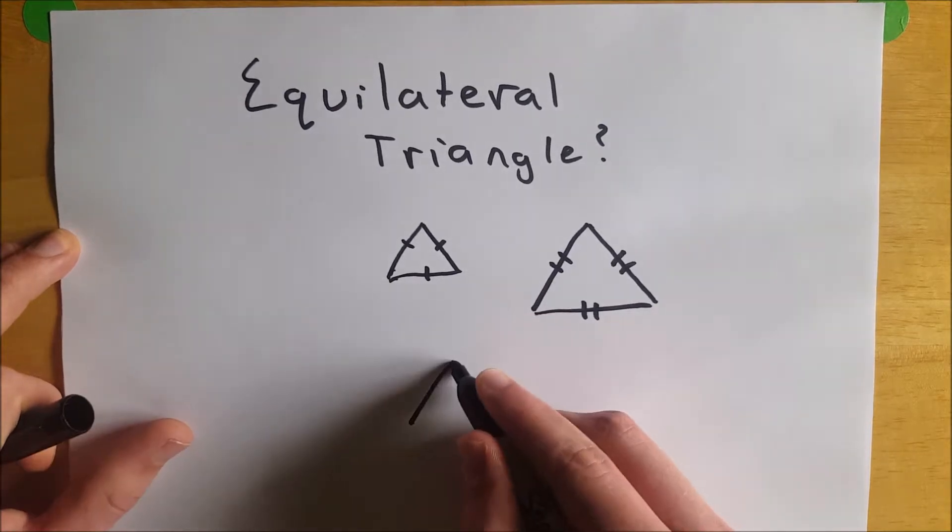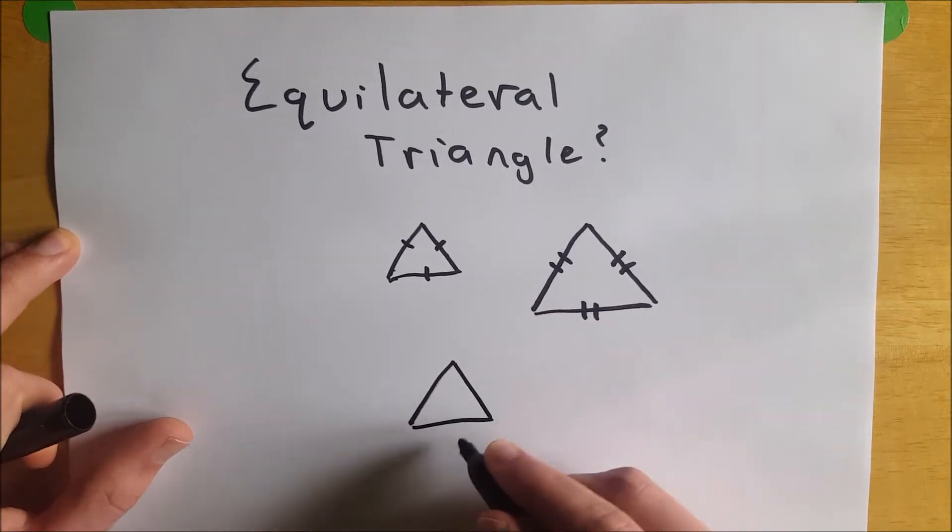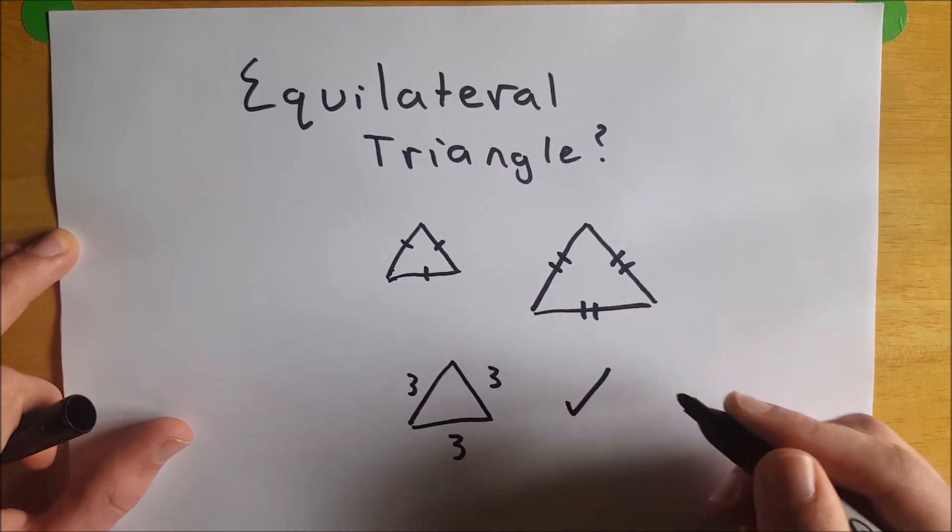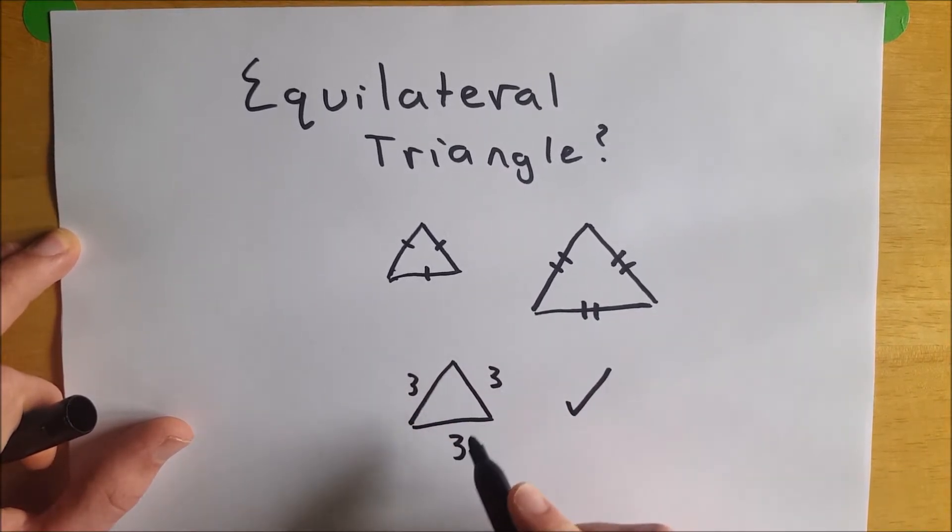So a triangle like this with side lengths 3, 3, 3 is equilateral because all of these sides have the same measure of 3.